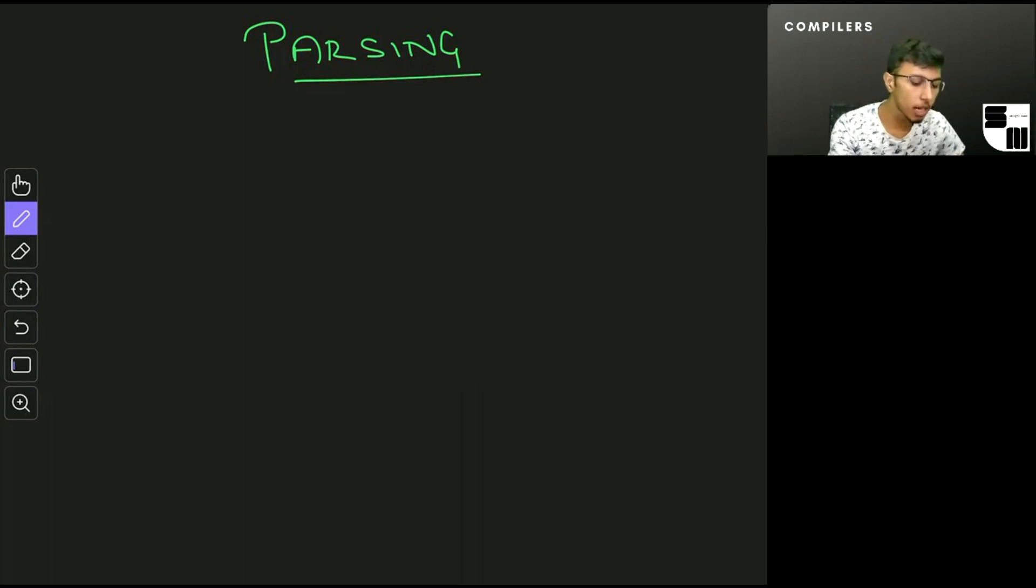Consider the grammar: let's say I have E goes to E times E or E plus E or an identifier. In this, let's say that I have the string id plus id times id. Now what I can do here according to the grammar is I could come up with different derivations and I could construct these two parse trees.